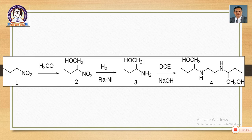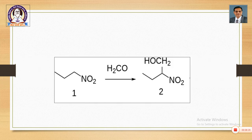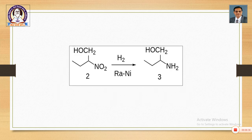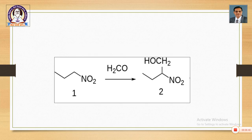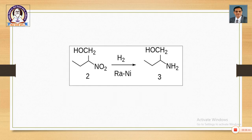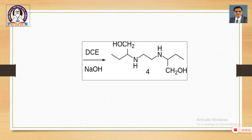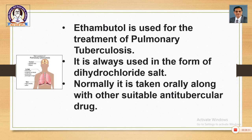By structural presentation you can remember the reaction. This slide shows the same reaction in split form. First step: reaction of nitropropane and formaldehyde. Second step: nitrobutanol is converted into aminobutanol. Third step: aminobutanol on condensation with dichloroethane gives ethambutol as the product.